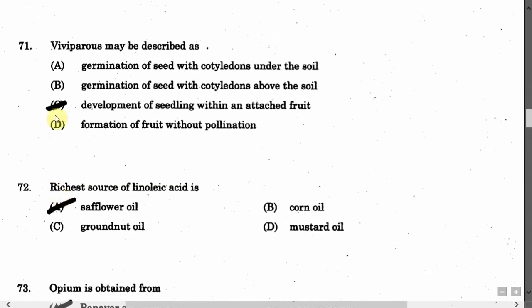The next question is: Vivipary may be described as — Option A: Germination of seed with cotyledons above the soil. Option B: Germination of seed with cotyledons under the soil. Option C: Development of seedlings within an attached fruit. Option D: Formation of fruit without pollination. The correct answer is Option C, that is development of seedlings within an attached fruit.